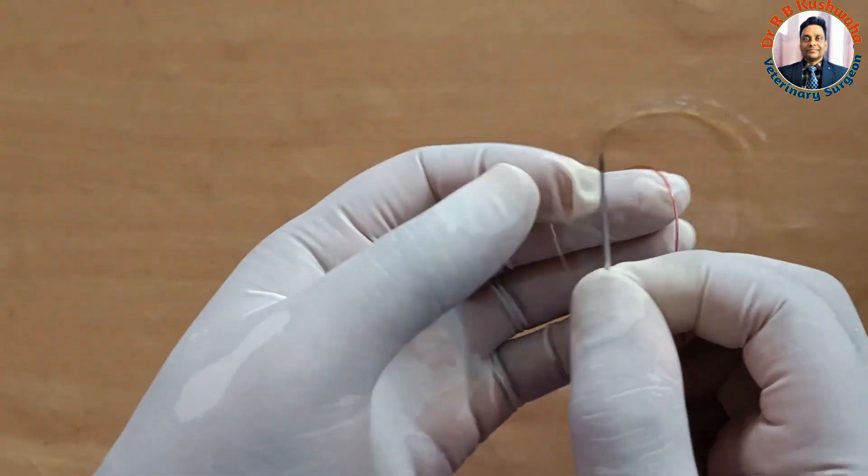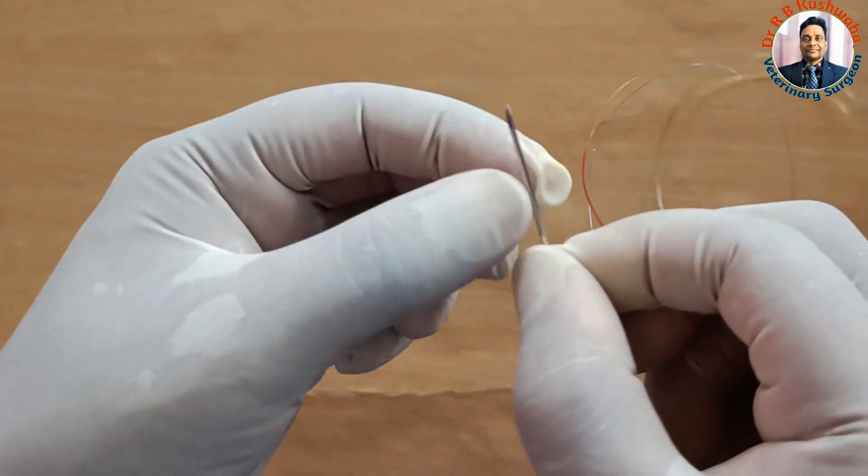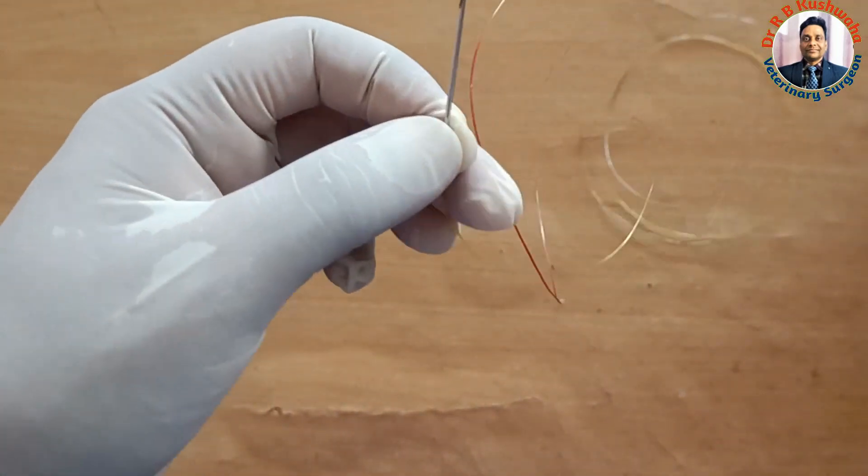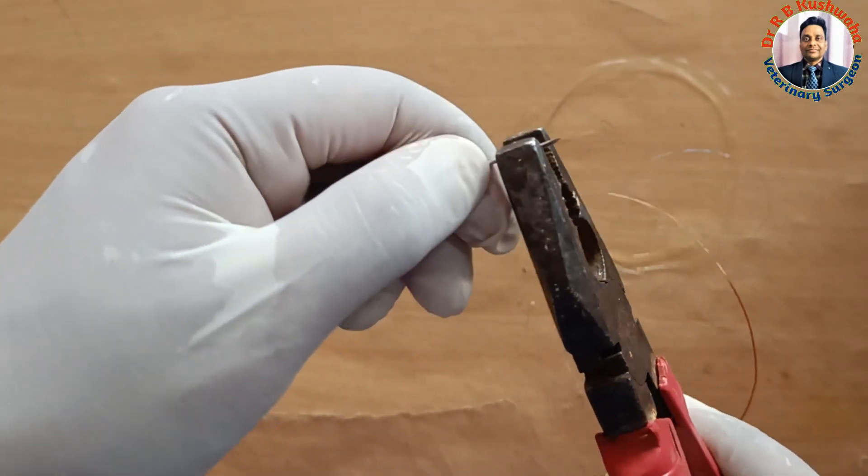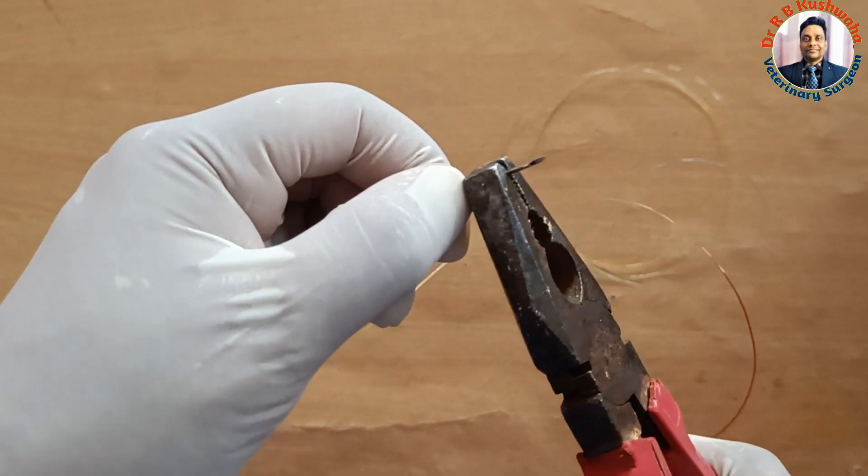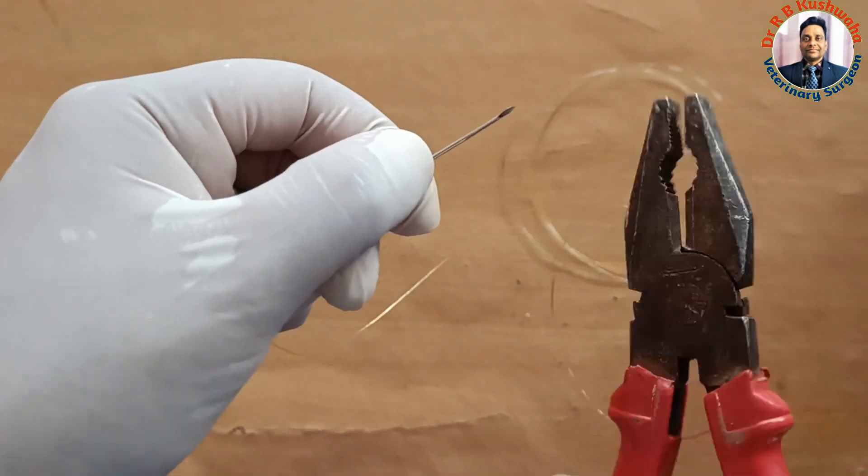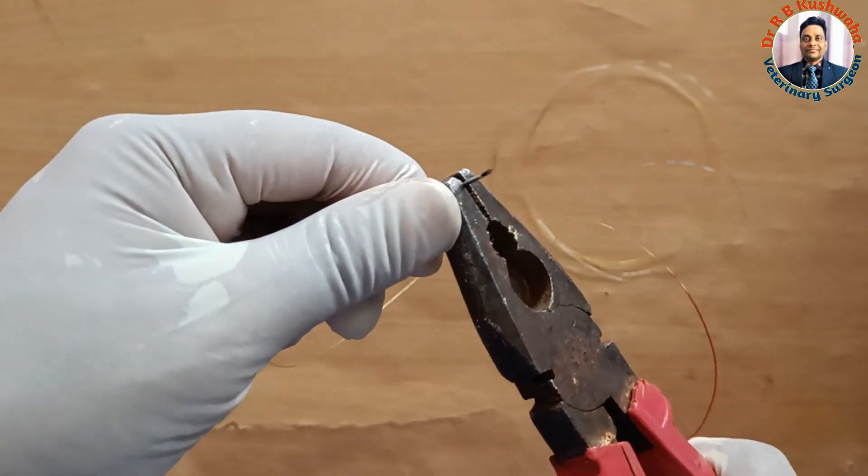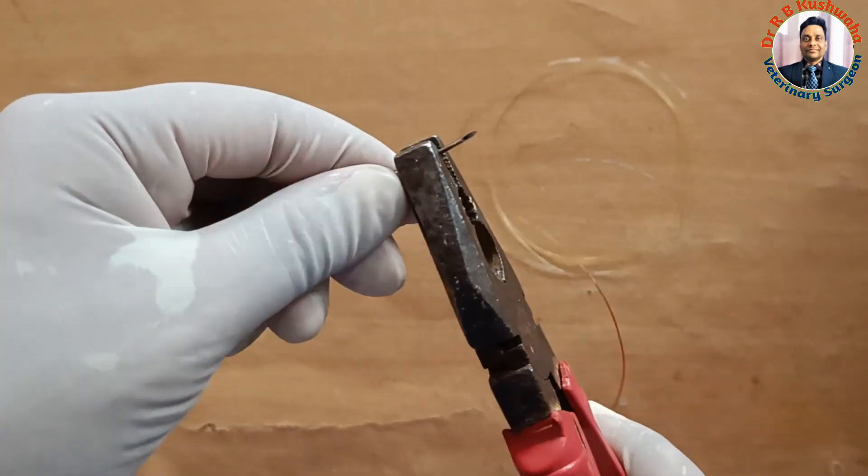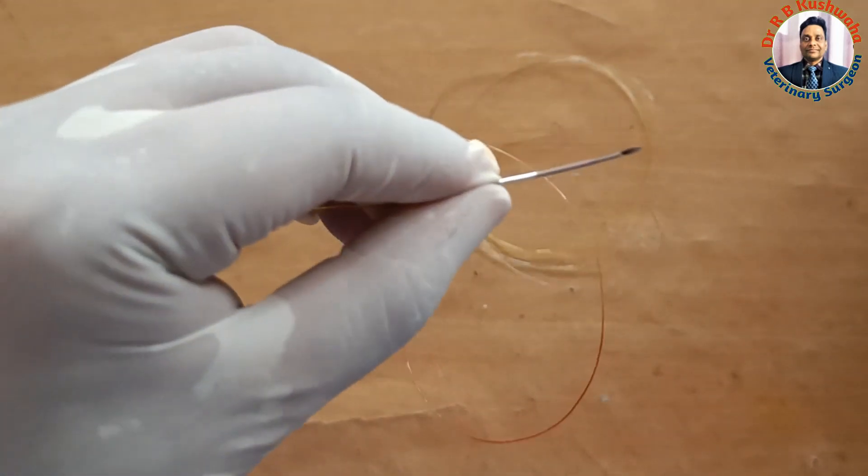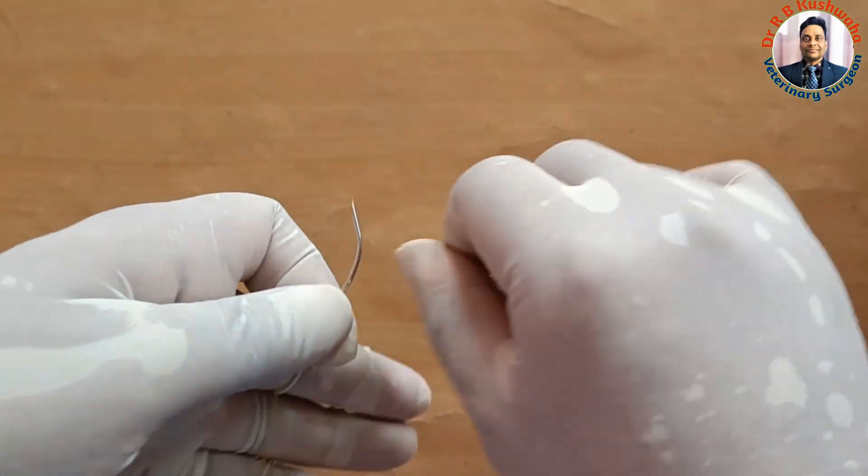It will act as a straight needle for suturing of cattle and buffalo skin. If you want to bend the needle you can bend like this. Always bend towards the bevel side, not in the opposite direction. As per the requirement you can bend like this.